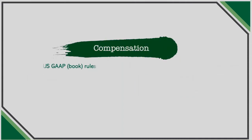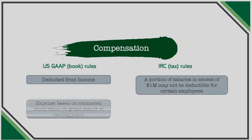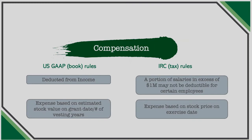Compensation is a significant expense for companies. However, the Internal Revenue Code limits the amount of expense taken on the tax return for certain highly paid employees. Additionally, when companies choose to pay their employees with stock options, the value used to determine expense for book purposes is estimated at a different date and using different metrics from what is used for tax purposes. In essence, the value of expense may be completely different for the two different areas of compensation.